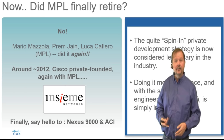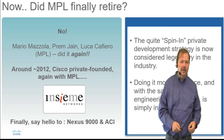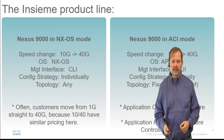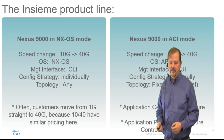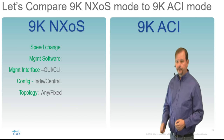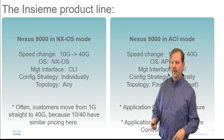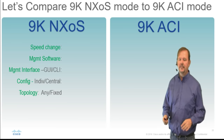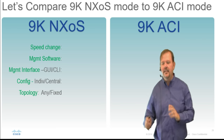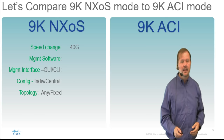Once again, the same engineering staff and management team that built UCS was brought over. When we compare these two modes, let's start with NXOS mode. The Nexus 9000 in NXOS mode had a speed change going on — this time from 10 gigabits to 40 gigabits. Actually, it's kind of fun — we have some customers whose inter-switch links are going from 1 gig and upgrading now to 40 gig.